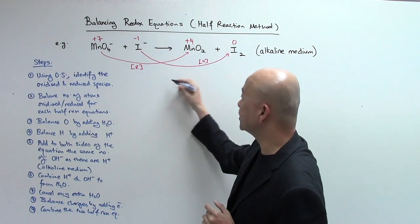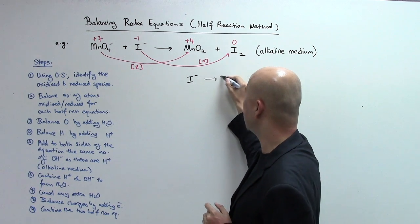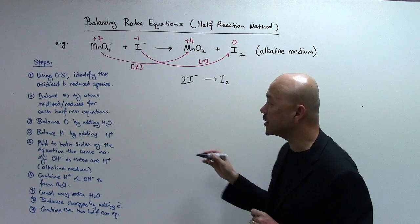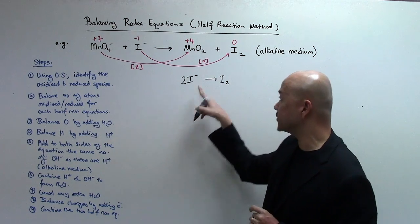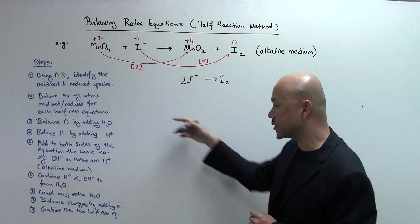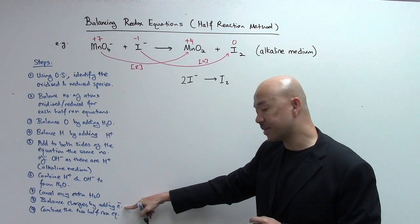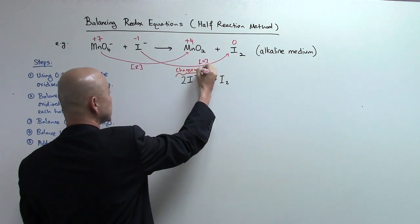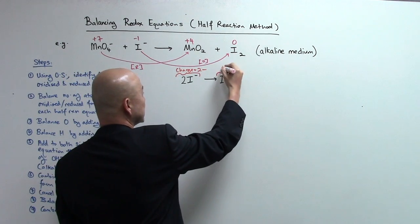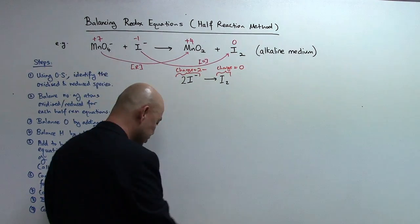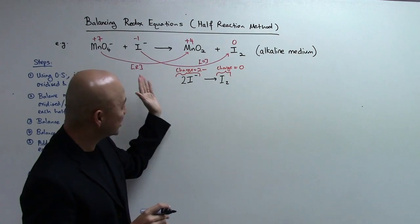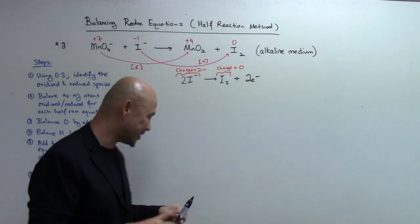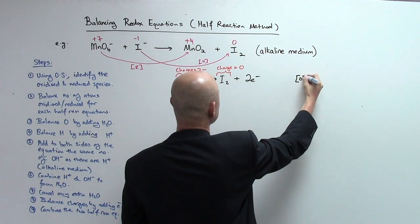Let's do the oxidation half first — this is much easier. I- becomes I2. Step 2: balance the number of atoms. There's only one iodine on the left, so we write 2I-. Regarding oxygen and hydrogen atoms, both sides don't have any O or H, so we go straight to balancing the charges by adding electrons. The overall charge on the left is 2-, and on the right I2 is neutral so it's 0. We add 2 electrons to the right-hand side, making both sides 2-. That gives us our oxidation half equation.